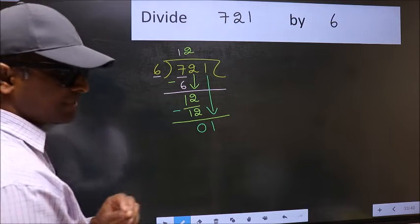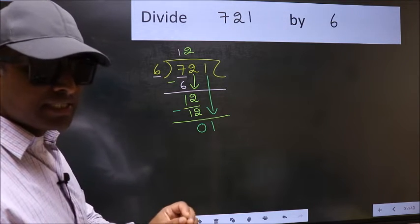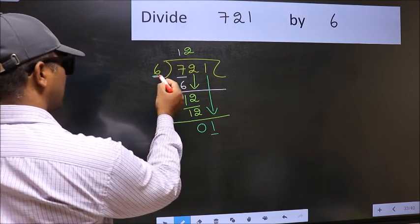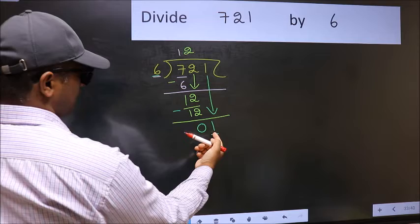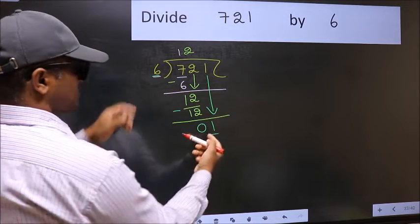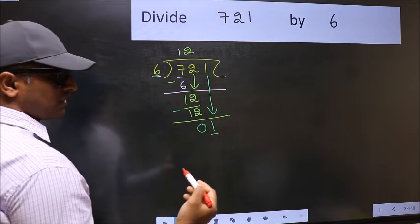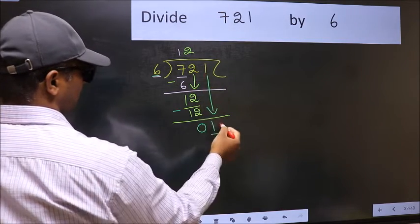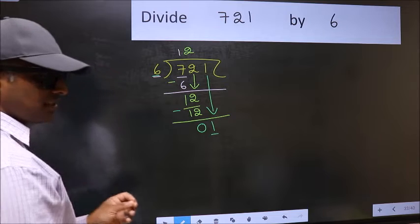And the mistake is this. Here we have 1 and here 6. 1 is smaller than 6. So, what many do is they directly put dot and take 0, which is wrong.